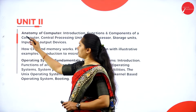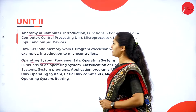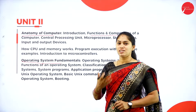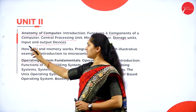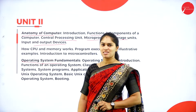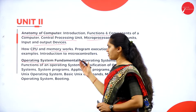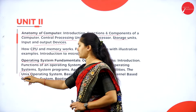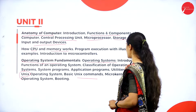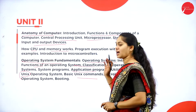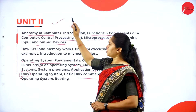Unit two covers two areas: anatomy of the computer and operating system fundamentals. In the anatomy section, you will learn the functional components of a computer, focusing on the CPU, microprocessor, storage unit, and input/output devices — how the CPU and memory work. For the operating system section, we give more importance to Unix, including its commands, functions, classification, application programs, system programs, and how the OS is helpful.